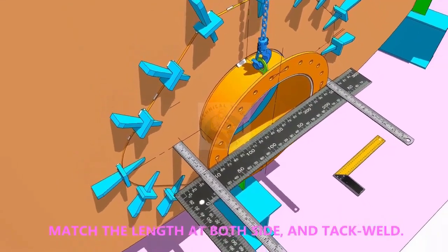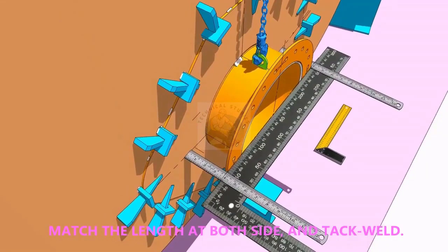Equal the distance on both sides of the flange as shown and TAC weld on both sides.